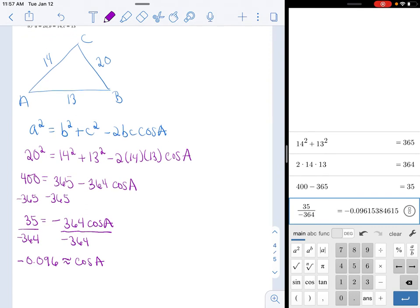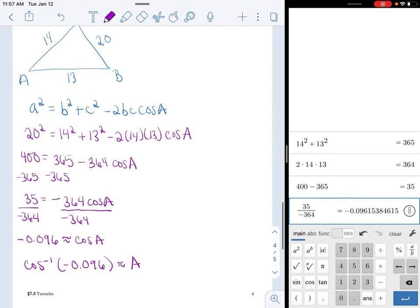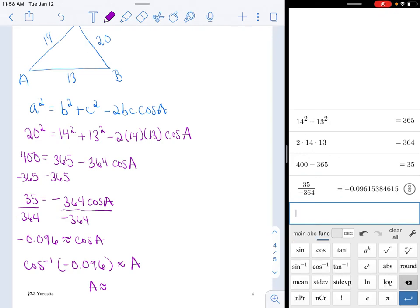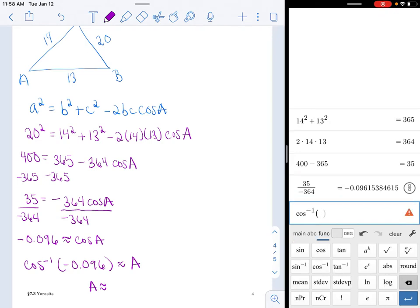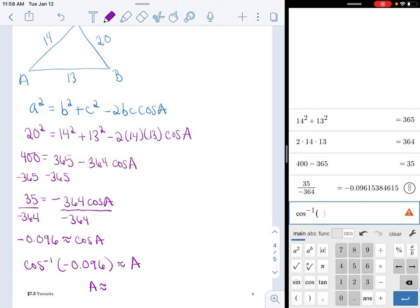So that's cosine A. Well, I want to isolate A, and it's an angle, so that's why I use my inverse function. And I like to put my variable on the left side. So I'm going to push enter, and I'm going to do function inverse of cosine, and I'm just going to put the answer, or you could put the ratio, whatever you'd like. So A is about 95.52 degrees.